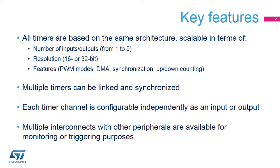All timers are based on the same architecture and are available in several derivatives. The timers mainly differ in the number of inputs and outputs they have, from a pure time base without any IOs, to an advanced control version with 9 IOs. Most timers feature 16-bit counters; some have 32-bit counters. Some features may not be present on the smallest timer derivatives, for example, DMA, synchronization, and up-and-down counting modes.